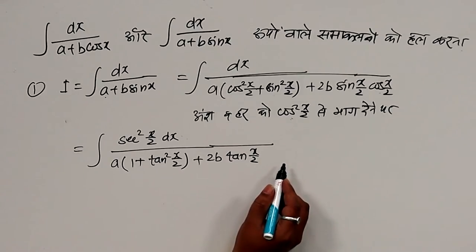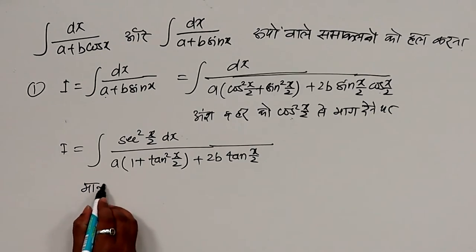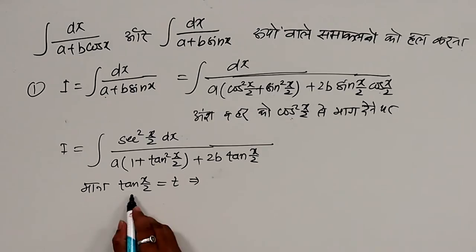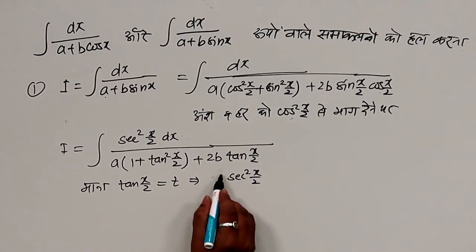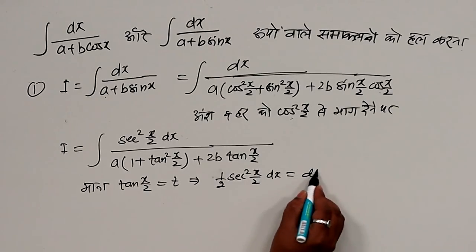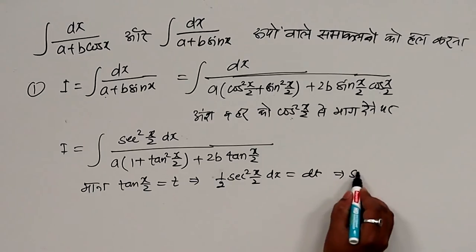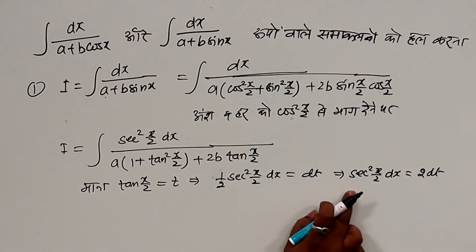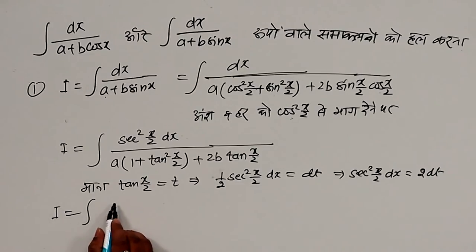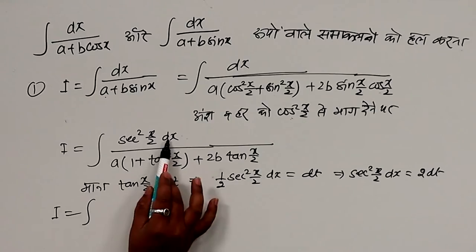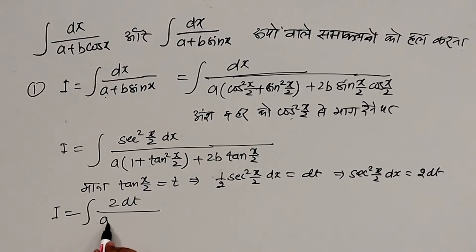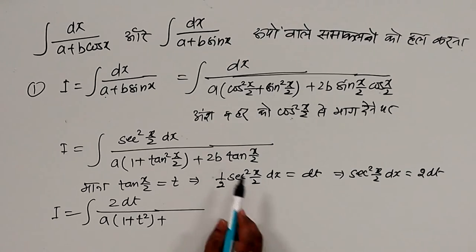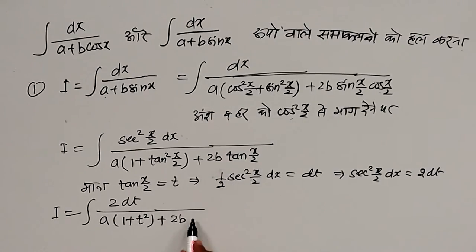अब प्रतिस्थापन का उपयोग करेंगे। माना tan(x/2) = t, तो अवकलन से मिलेगा sec²(x/2) · (1/2) dx = dt, अतः sec²(x/2) dx = 2 dt। इस प्रतिस्थापन को लागू करने पर मिलेगा: i = ∫ 2 dt / (1 + t² + 2b·t), जहाँ tan(x/2) = t रखा है।